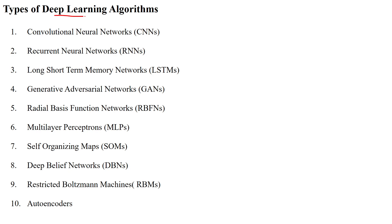There are many types of deep learning algorithms: convolutional neural networks, recurrent neural networks, LSTMs, generative adversarial networks, radial basis function networks, multi-layer perceptrons, self-organizing maps, DBNs, restricted Boltzmann machines, and auto-encoders. We can select the suitable algorithm based on the given problem statement. Thanks for watching.